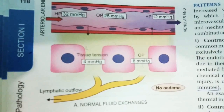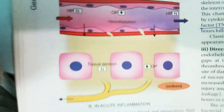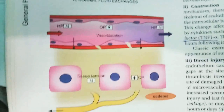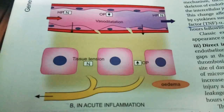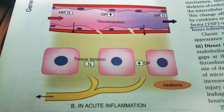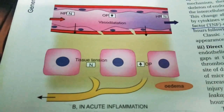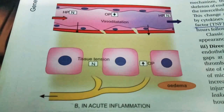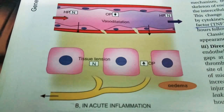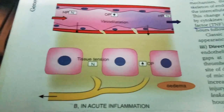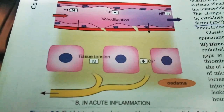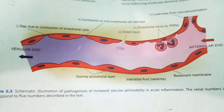In acute inflammation, as seen in the diagram, the osmotic pressure falls while hydrostatic pressure remains normal, resulting in increased outflow which causes edema. The patterns of increased vascular permeability are as follows — there are six patterns shown in the diagram.